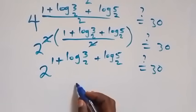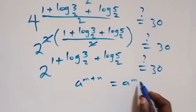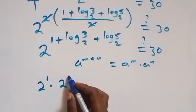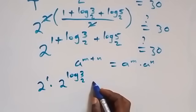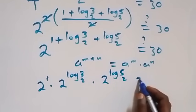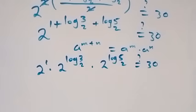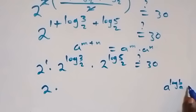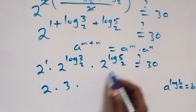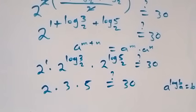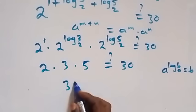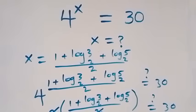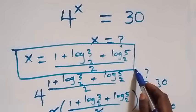Applying the law of indices — a raised to power m plus n equals a^m times a^n — this becomes 2 raised to power 1, times 2 raised to power log 3 base 2, times 2 raised to power log 5 base 2, equals 30. Now 2^1 is 2, and using b^(log_b n) equals n, we get 2 times 3 times 5 equals 30, which gives 30 equals 30. Left-hand side equals right-hand side, confirming x equals (1 plus log 3 base 2 plus log 5 base 2) over 2.